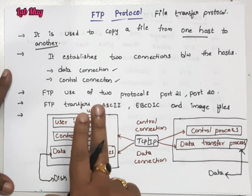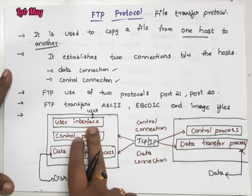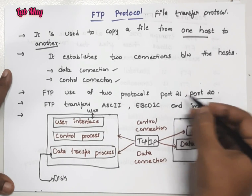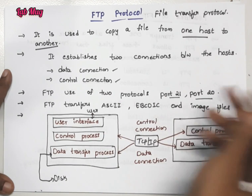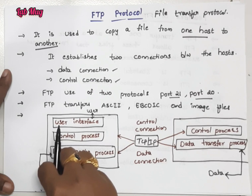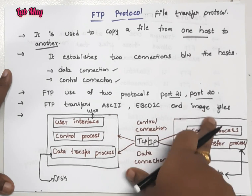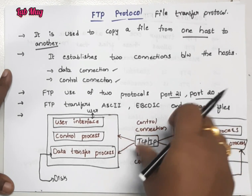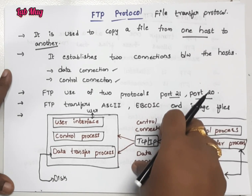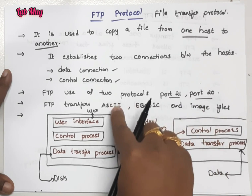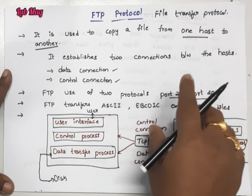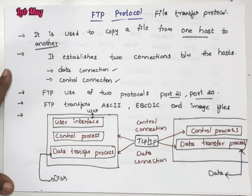FTP uses two ports: 20 and 21. FTP transfers ASCII files, EBCDIC files, and image files. We use FTP protocol to transfer these types of files.